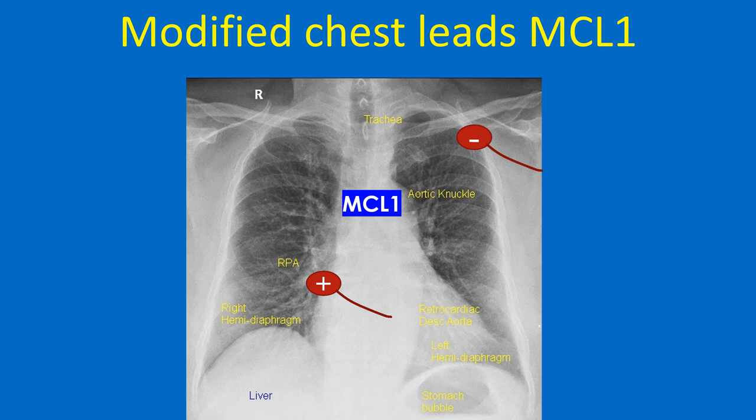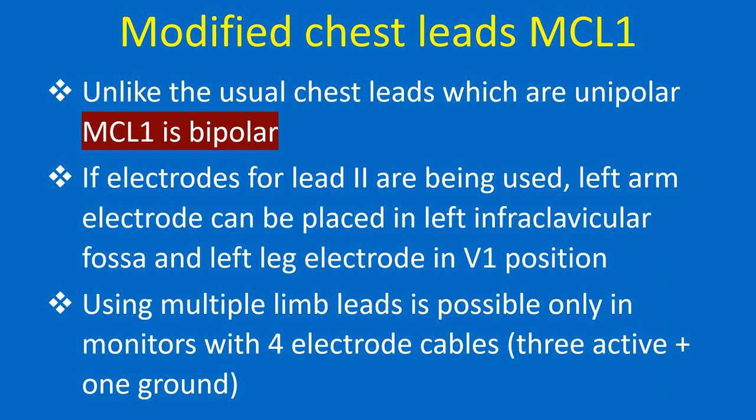The approximate position of electrodes for MCL1 monitoring is as follows: the combination for lead 1 can be used in reverse manner for MCL. The right arm electrode is kept in the left infraclavicular fossa and the left arm electrode in V1 position. Unlike the usual chest leads which are unipolar, MCL1 is bipolar. If electrodes for lead 2 are being used, the left arm electrode can be placed in the left infraclavicular fossa and the left leg electrode in V1 position.